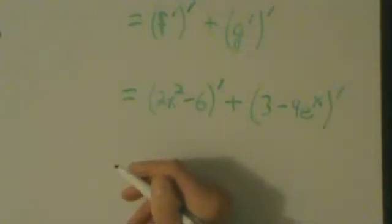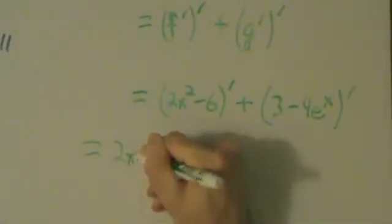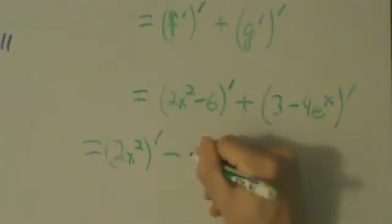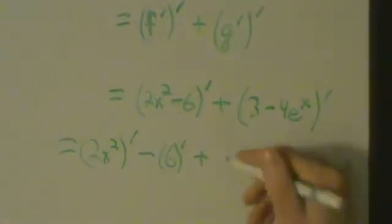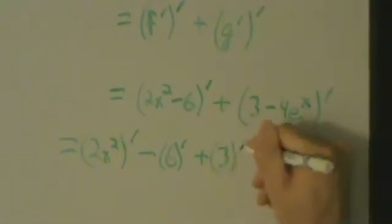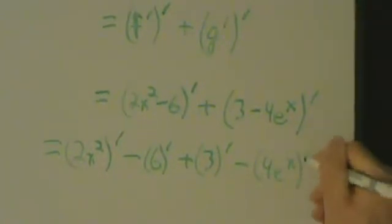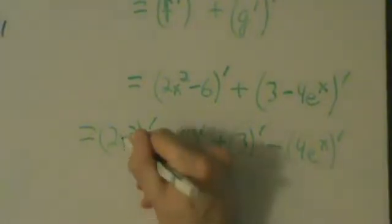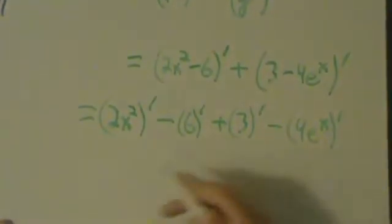So this is going to equal (2x²)' - (6)' + (3)' - (4e^x)'. So this notation is kind of weird, but it might show up somewhere along the way, and some people do like to use this kind of notation. So I just want to show you just so that you're at least familiar with it.